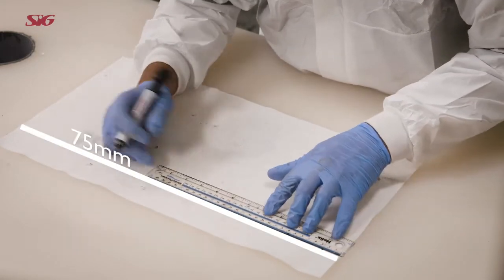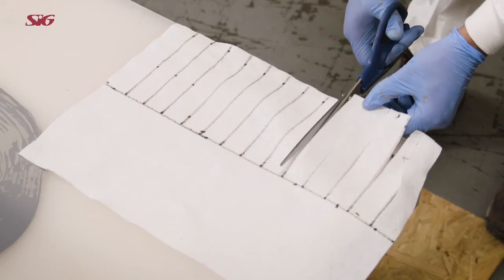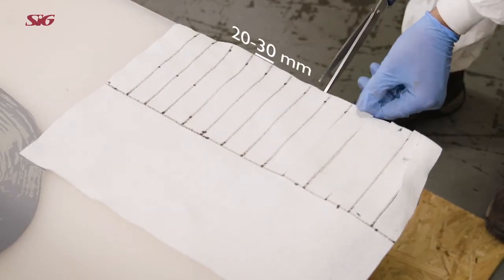Measure and draw a line 75mm from the edge of the fabric and make cuts up to the line that are 20-30mm wide.